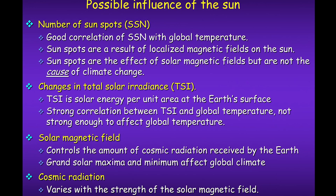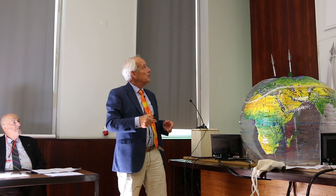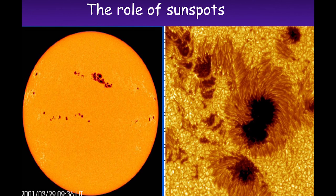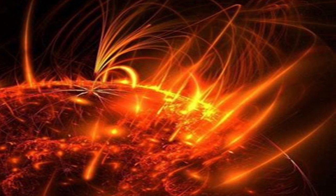The solar magnetic field controls the amount of cosmic radiation received by the Earth. Solar maximum affects global temperature, and cosmic ray variation depends on the strength of the solar magnetic field. So Easterbrook is talking about a solar magnetic field that includes both irradiance and solar wind. Sunspots are dark parts with very high temperature and have varied not only in the 11-year cycle but also in the grand solar maxima and minima, which have a real effect on the Earth's surface.